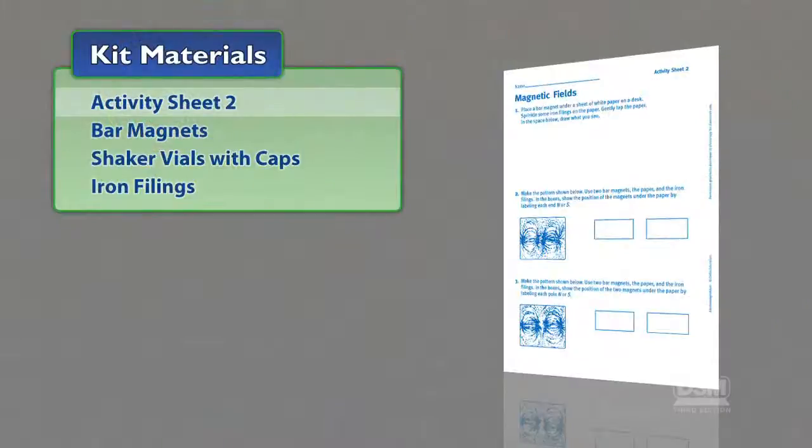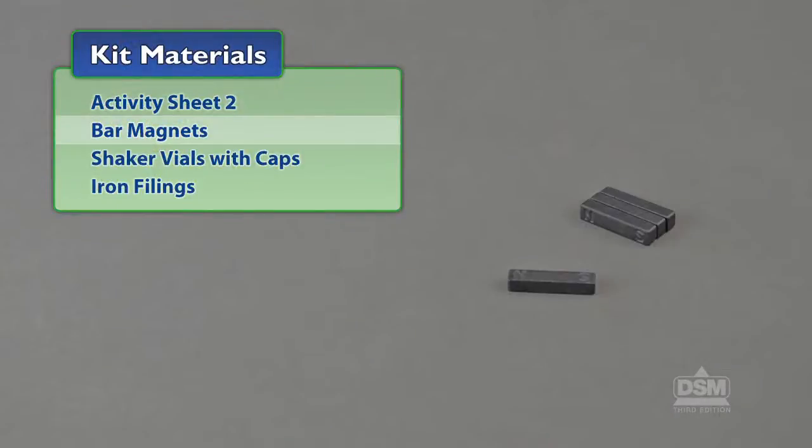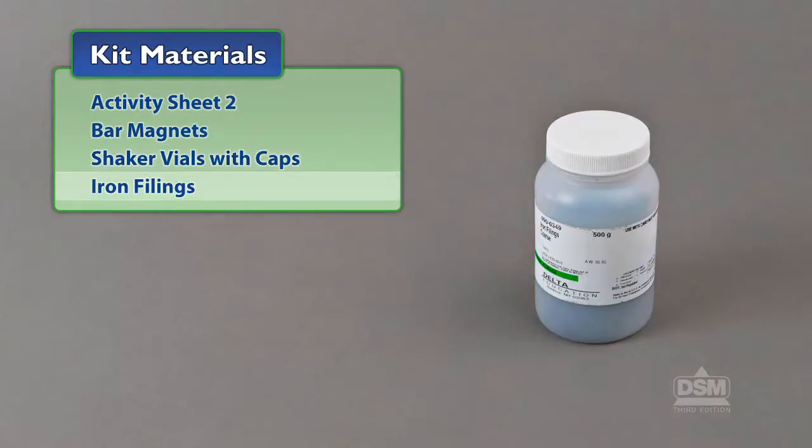You will need the following materials from the kit: Activity Sheet 2, Bar Magnets, Shaker Vials with Caps, and Iron Filings.